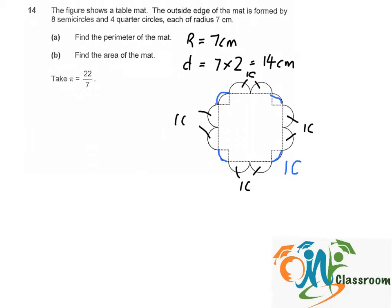So to find the perimeter of the mat, it will be simply the perimeter of the 5 circles. Okay, so now let's find the circumference of 1 circle first.